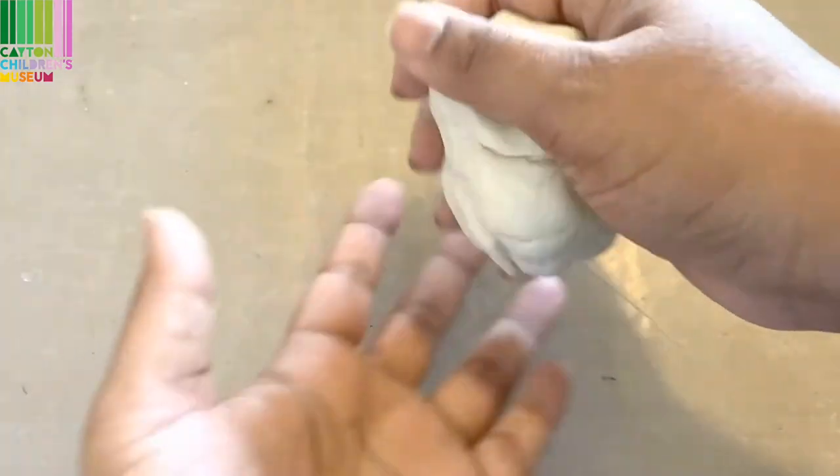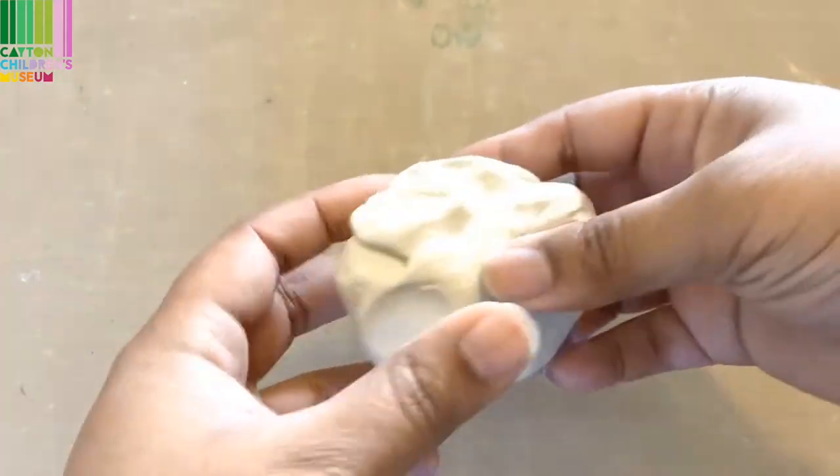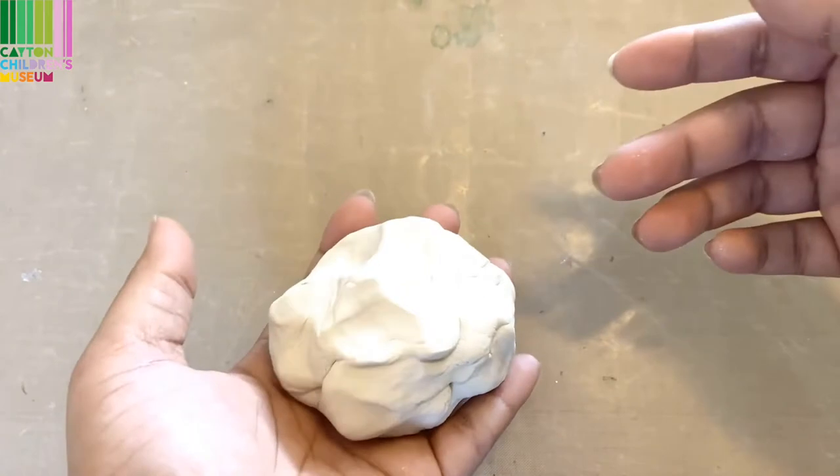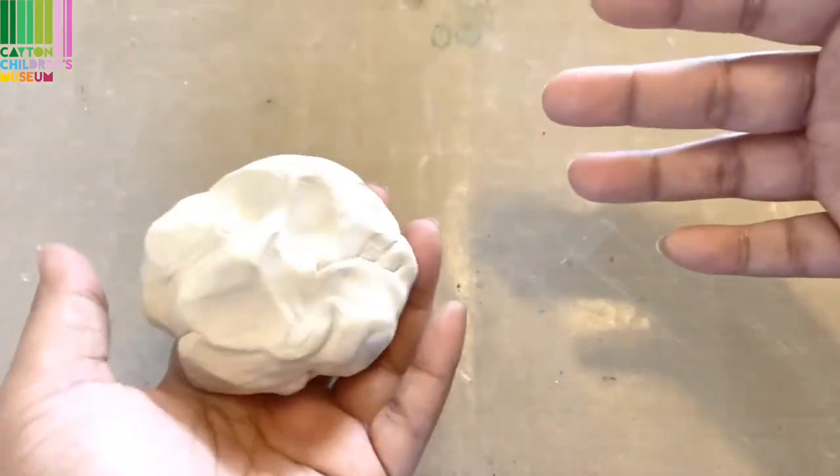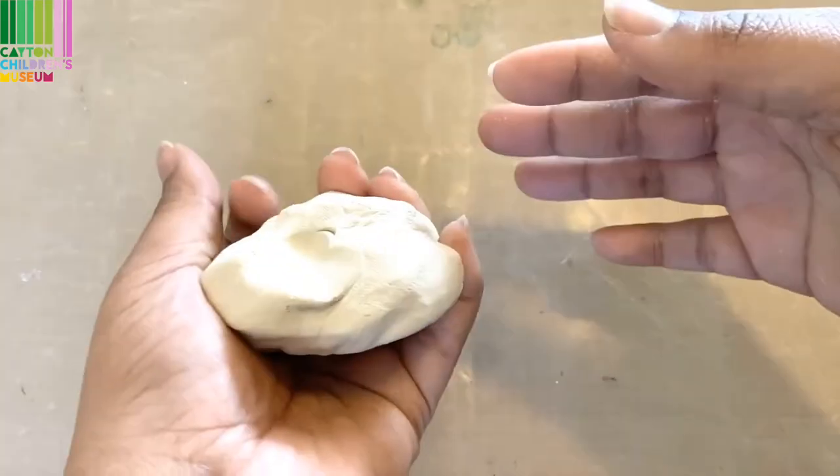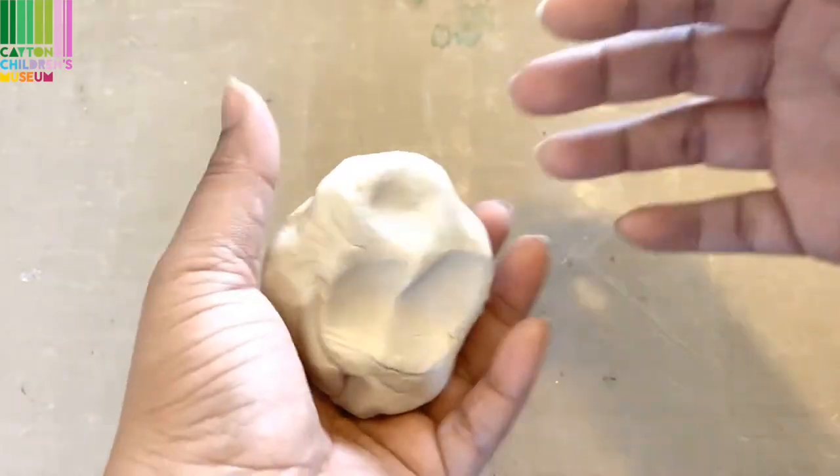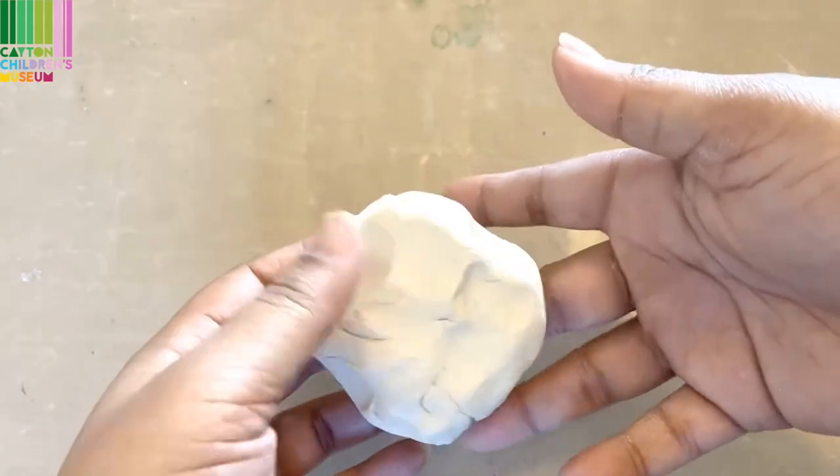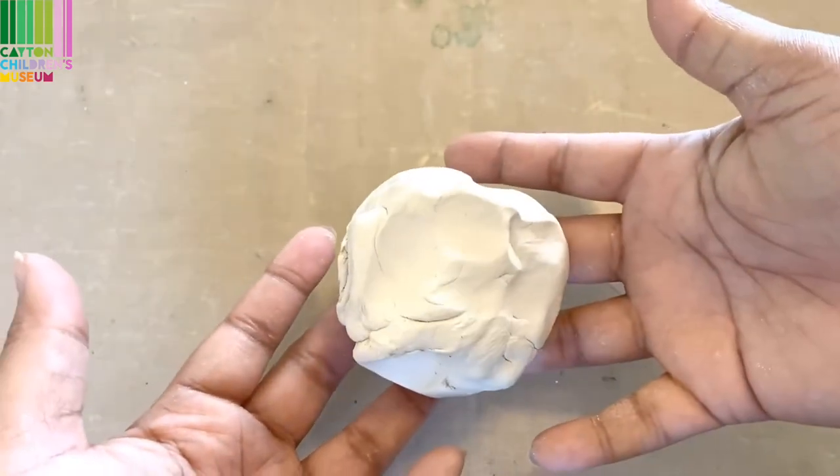Now that we've gotten our clay portion out, the first thing I am going to want to do is figure out what kind of shape I want my tea light candle holder to be in. I think for this one, I will be creating a flower shape of some sort.